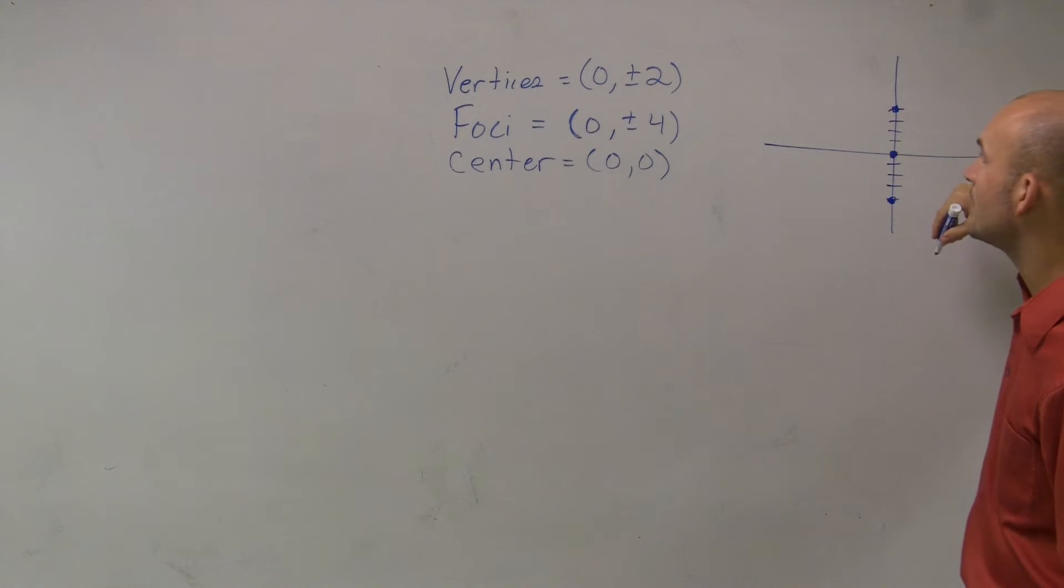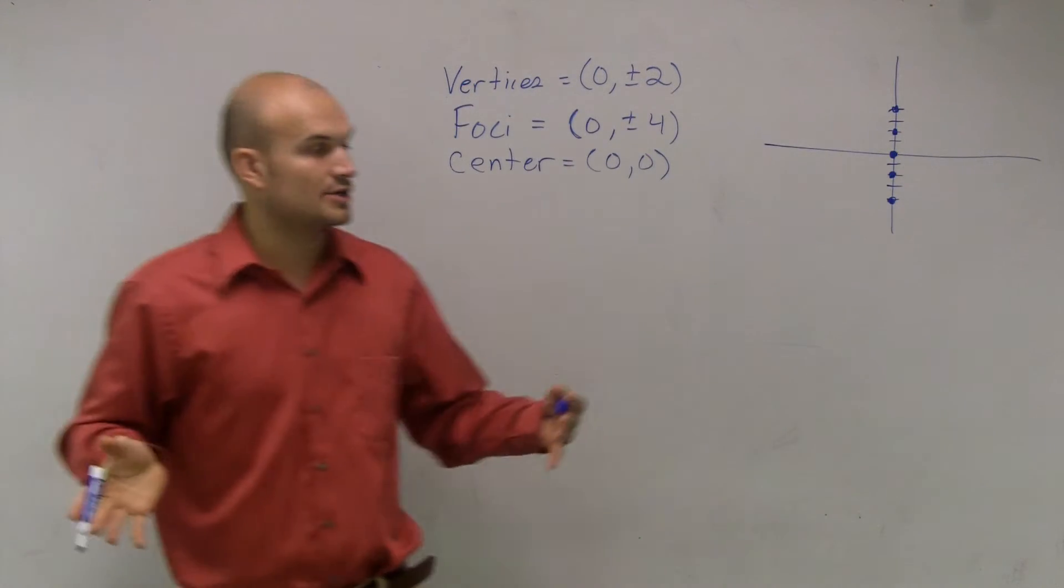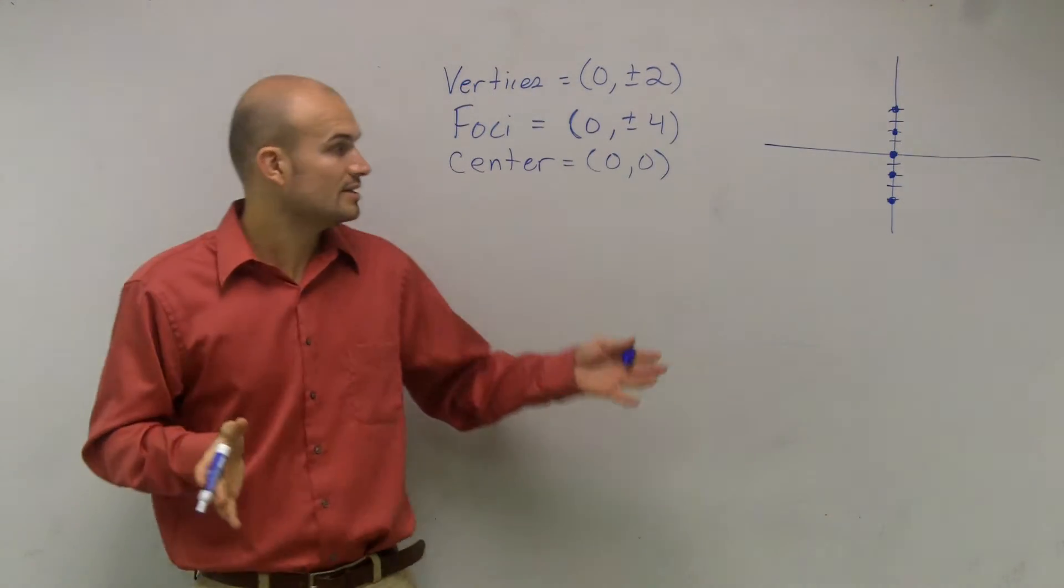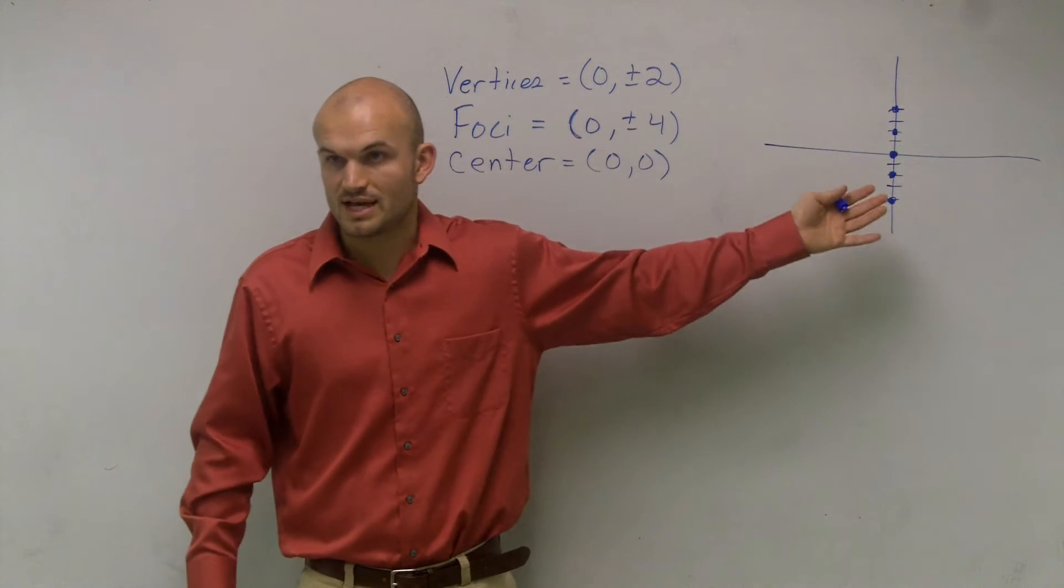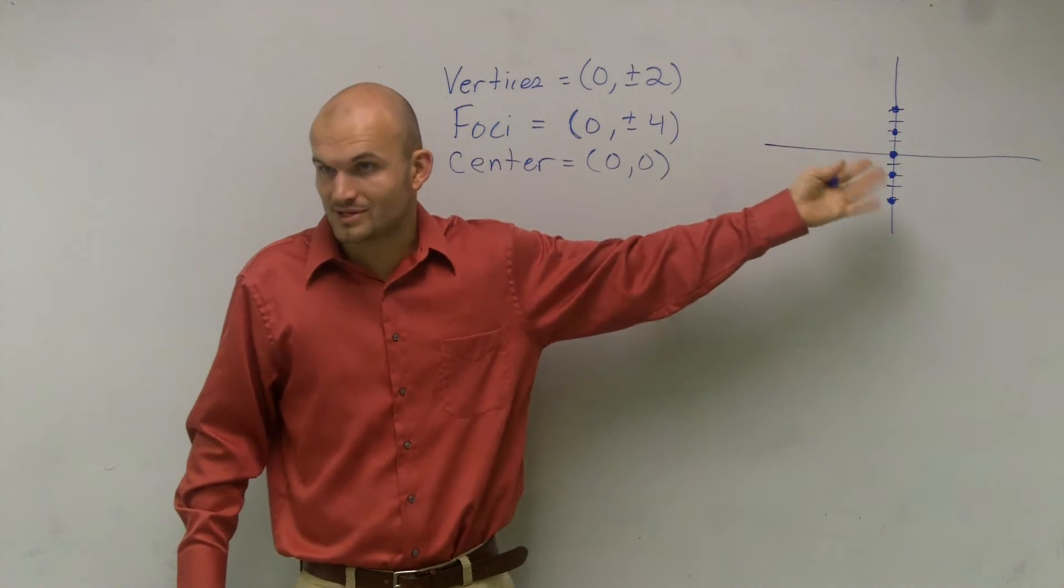And my vertices are at (0, ±2). So just like an ellipse where everything, your foci and your vertices, were on your major axis of symmetry, now these are what we're going to call our transverse axis. And we know this is going to be vertical.